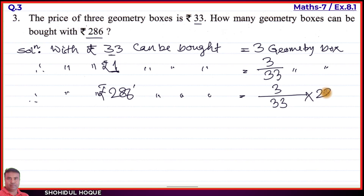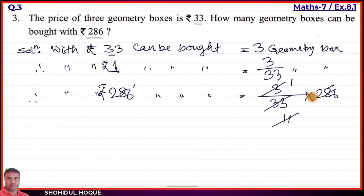Calculating: 3 divided by 33 multiplied by 286. We simplify — 33 divided by 3 equals 11. Then 286 divided by 11 equals 26. So the answer is 26 geometry boxes.